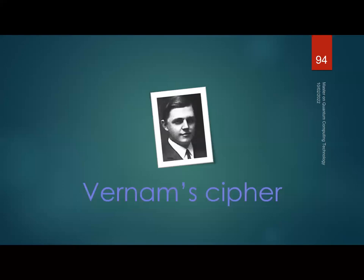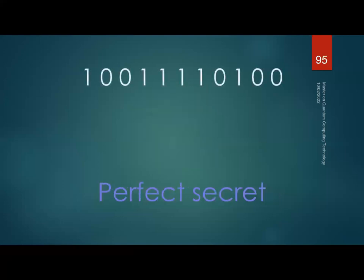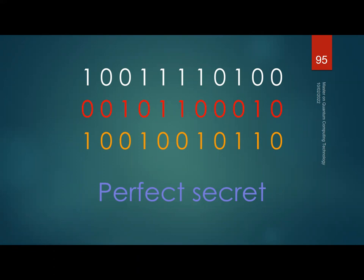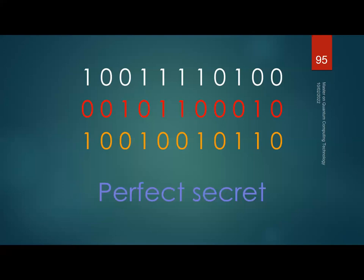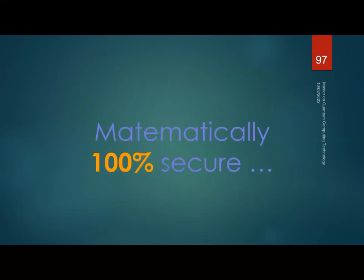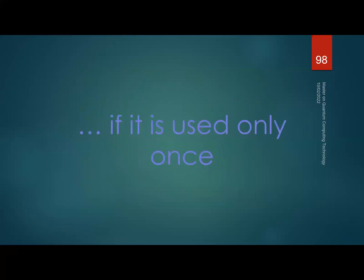The one-time pad — also called the Vernam cipher — is very simple and is called the perfect secret. You take the sequence you want to encrypt, apply a key using binary addition modulo 2 (XOR), and get encrypted output. To decrypt, you XOR with the key again and recover the plaintext. It is mathematically 100% secure if used only once, if the key is completely random, and if the key is as long as the message.